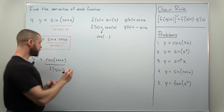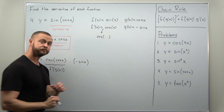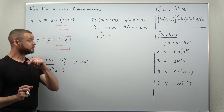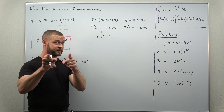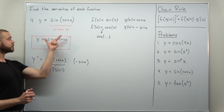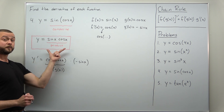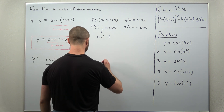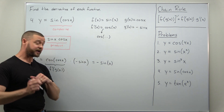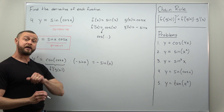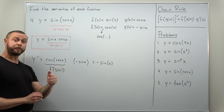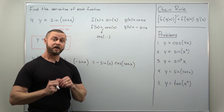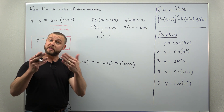The last step: we multiply by g prime, which is negative sine of x. This is not a difficult calculation, but the notation certainly makes it confusing. Make sure you're comfortable taking all your pieces and plugging them into one another for the composite f prime of g of x. Also make sure you're clear on the difference between writing a composite versus a product. We can clean this up by pulling negative sine of x out front, giving us negative sine of x times cosine of cosine of x.